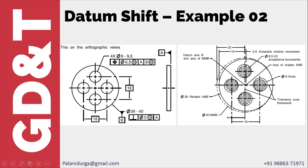When the part is produced at its least material condition, that is 39 mm, it can have a float of 1 mm from the center — it can move by 0.5 mm. This 0.5 mm is called datum shift. When we put this part into a fixed gauge with four pins and if the part enters with clearance, it is acceptable. That clearance is the datum shift. In this particular example it is 0.5 mm.